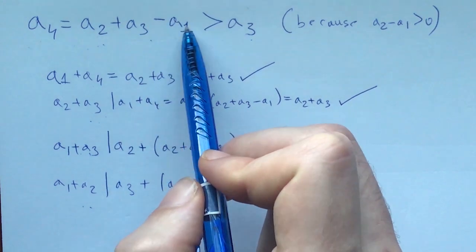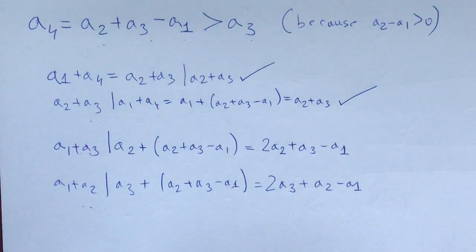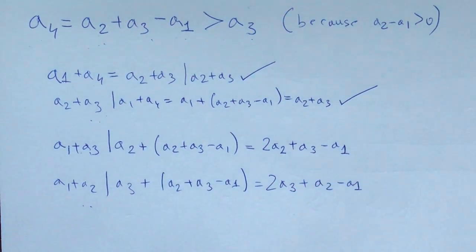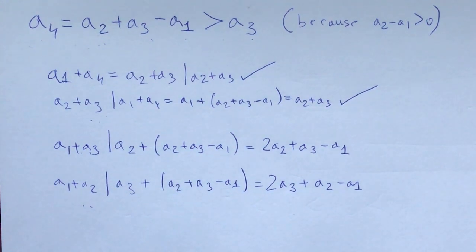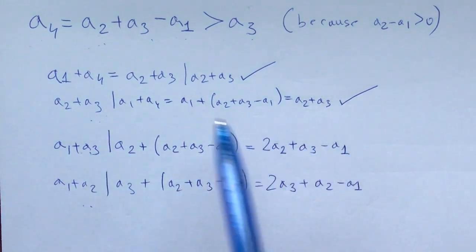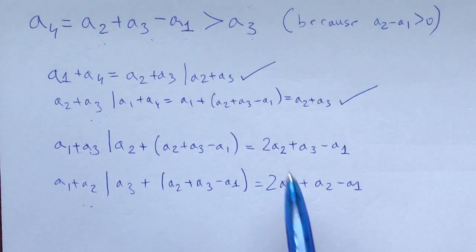We are getting rid of a4 so that we only have a1, a2, and a3 to deal with, thereby simplifying our problem. Simplifying a problem can be very useful because it's very easy to go back and it's much easier if you have fewer things to think about and manipulate.